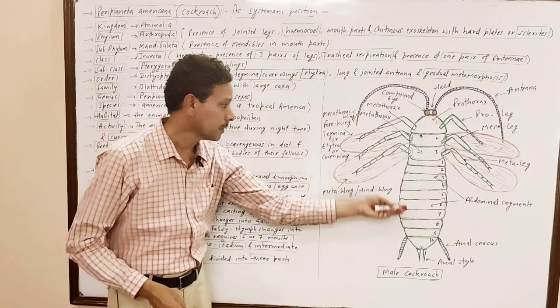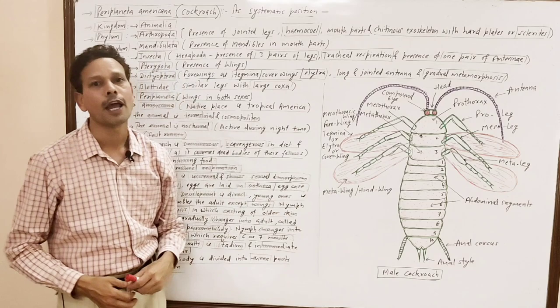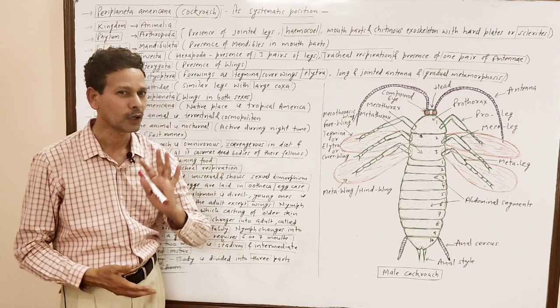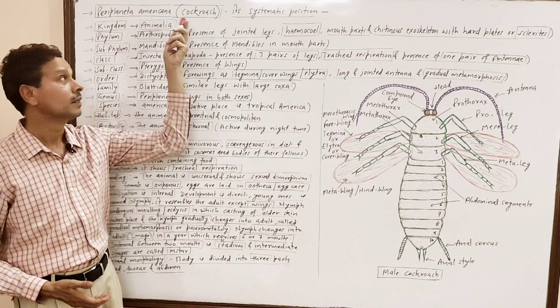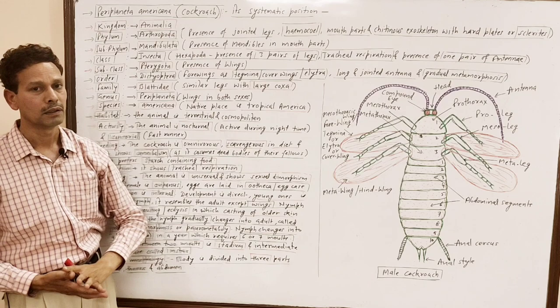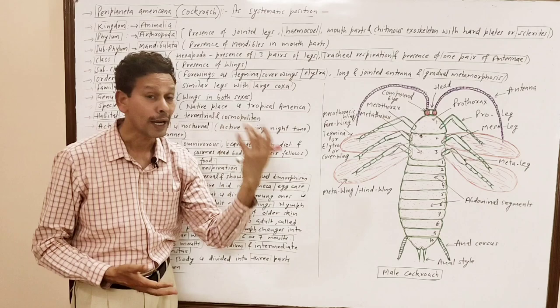Dear students, please note that the PDF file of all these notes has been uploaded in the description of the video lecture. Please download your notes. Today we will start a new type study and the animal is cockroach, Periplaneta americana. This animal, cockroach, belongs to phylum Arthropoda, in which we study animals having jointed legs.